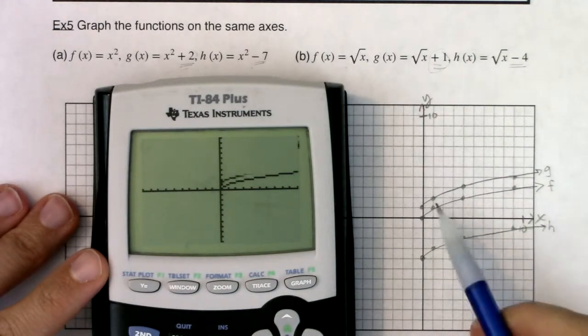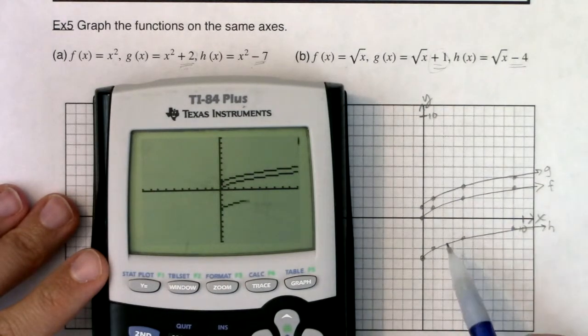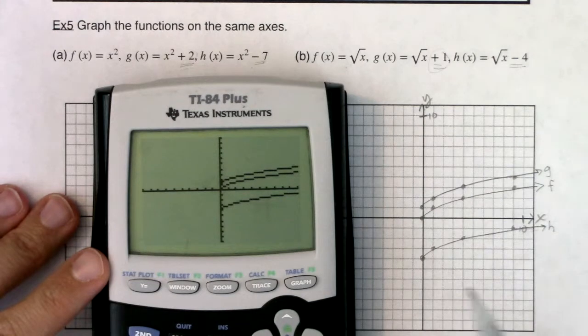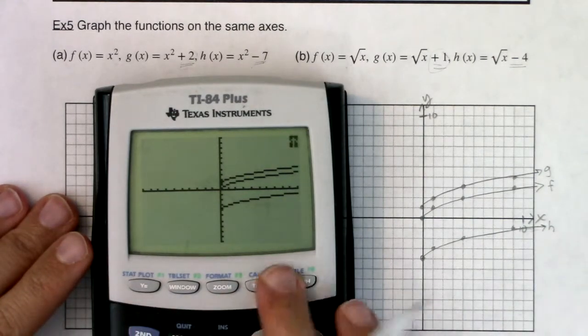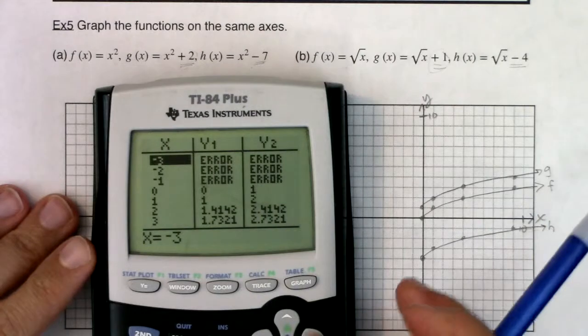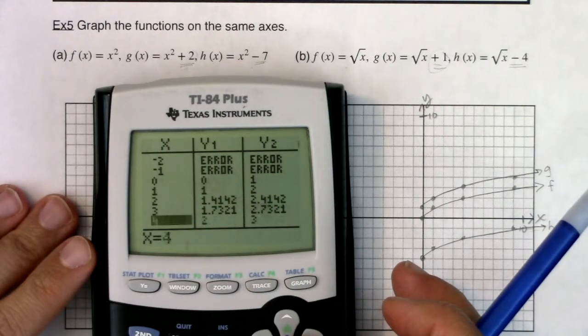Alright, there's f of x. Great. There's f of x plus one. Great. And there is f of x minus four. And if I wanted to, again, you can go to your table and check out all of those y values.